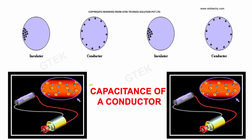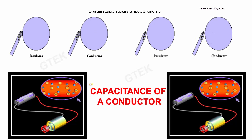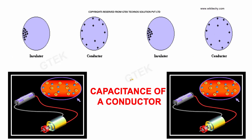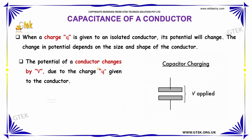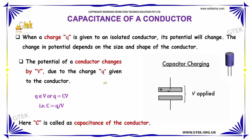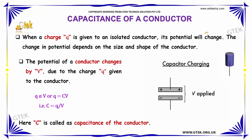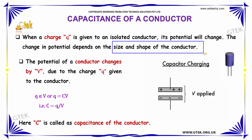Now let's move on to the concept called capacitance of a conductor. When a charge Q is given to an isolated conductor, its potential will be changing. The change in potential depends on the size and the shape of the conductor.